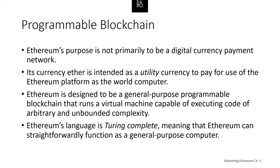Unlike Bitcoin, which has a very limited scripting language called Bitcoin Script, Ethereum is designed to be a general purpose programmable blockchain. Ethereum's language is intended to be Turing complete, meaning that Ethereum can function as a general purpose computer, including providing loops. Whereas Bitcoin's language does not permit loops, as it is focused on simple evaluations of spending conditions.